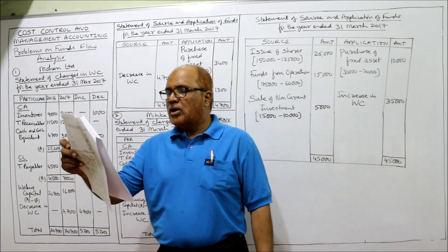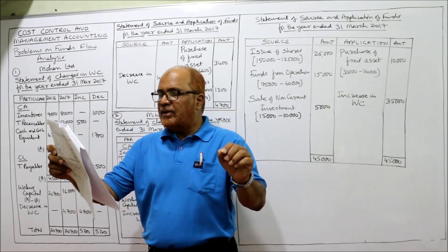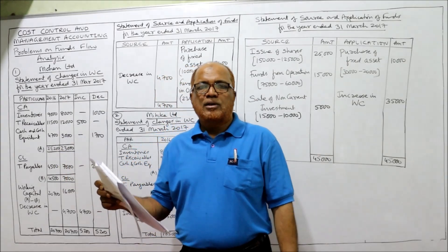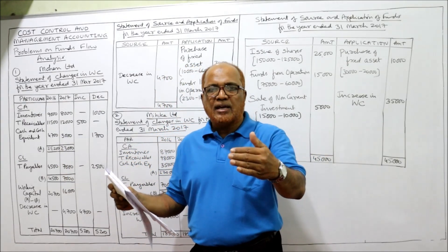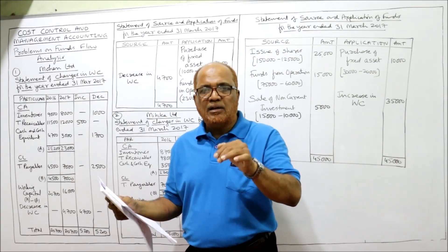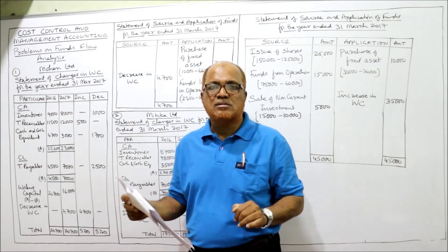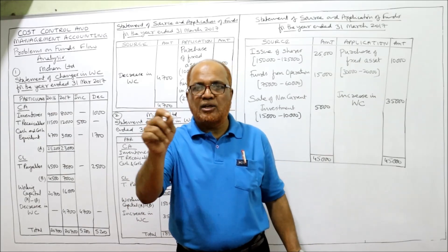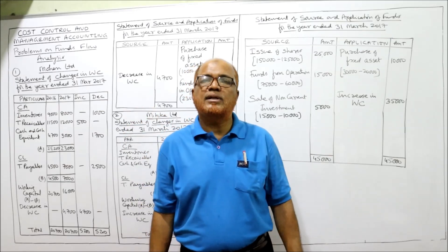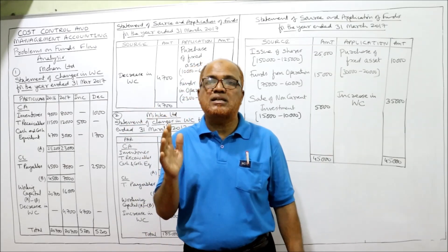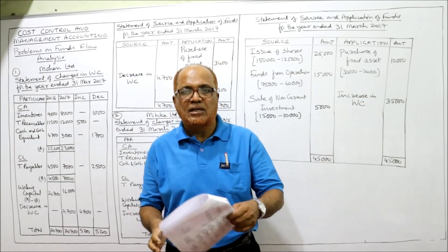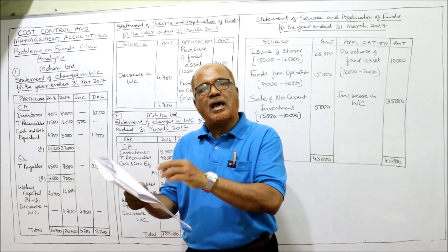Under equity and liabilities, shareholders' share capital: last year 25,000, current year 25,000 — no change, ignore. When there is an increase in share capital, it means issue of shares. When there is a decrease in share capital, it means redemption of shares. There is no change in share capital here, so ignore.